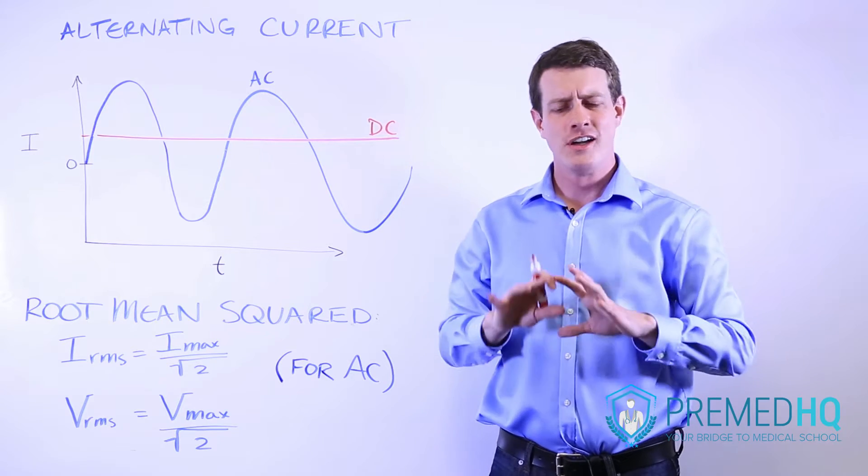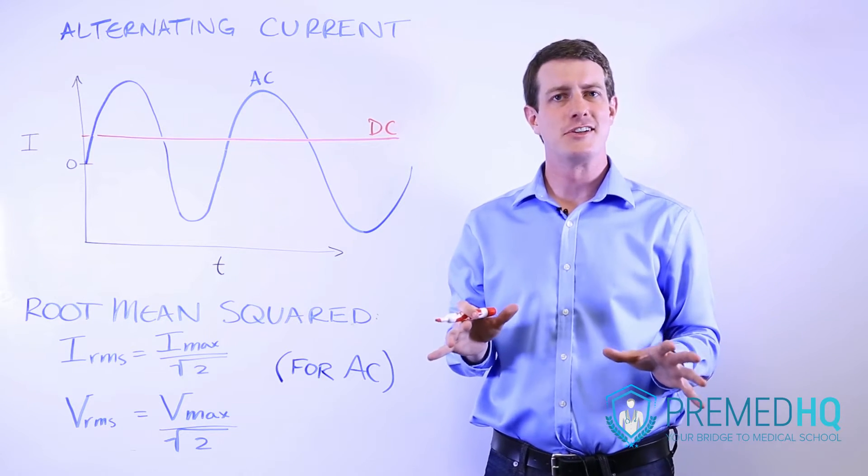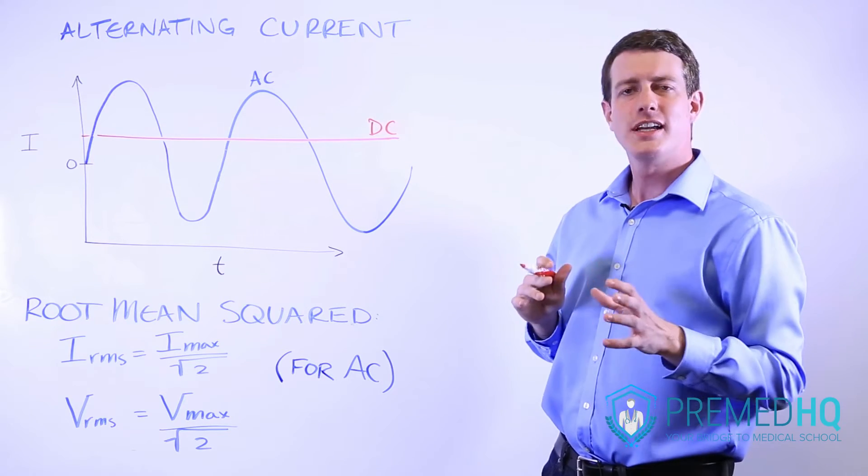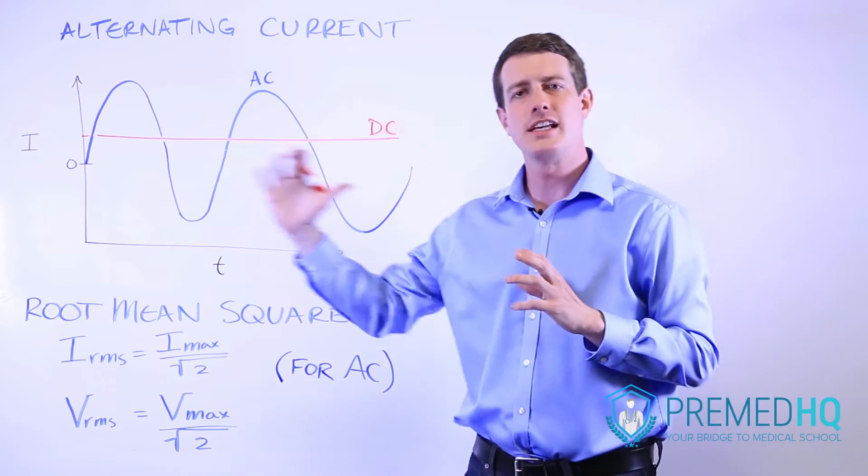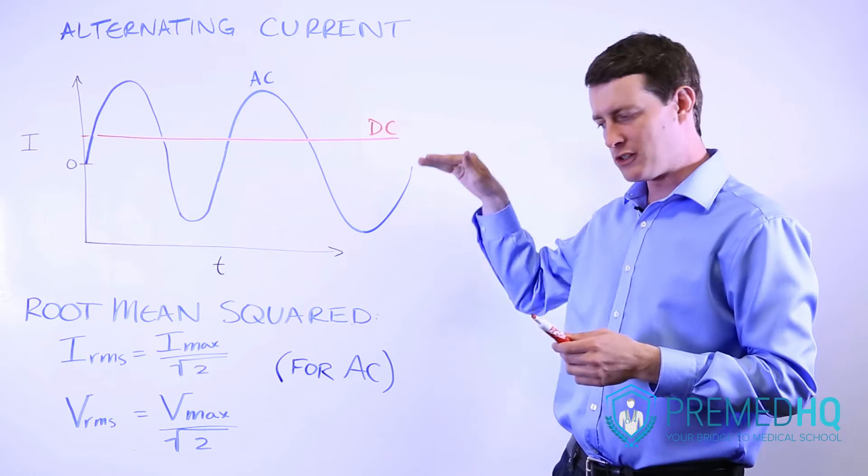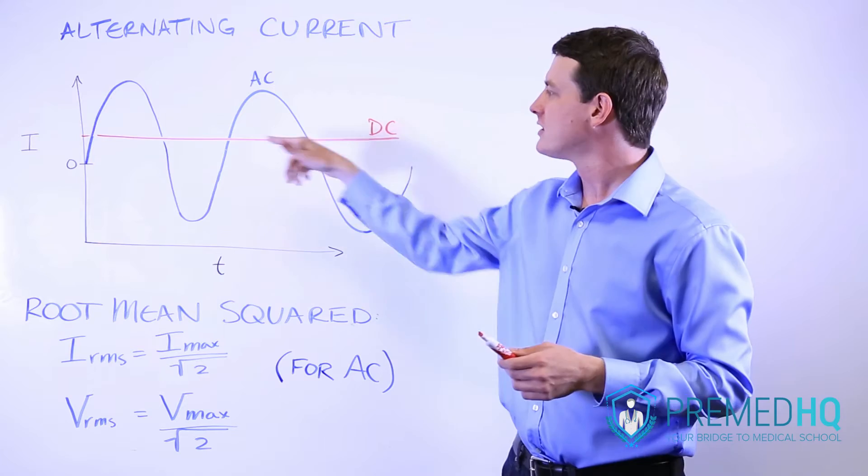Alternating and direct current are fairly simple concepts to understand, as you can see here laid out by this graph. Alternating current means that the current flows in and then out of a source, whereas direct current is one directional and remains constant over time.